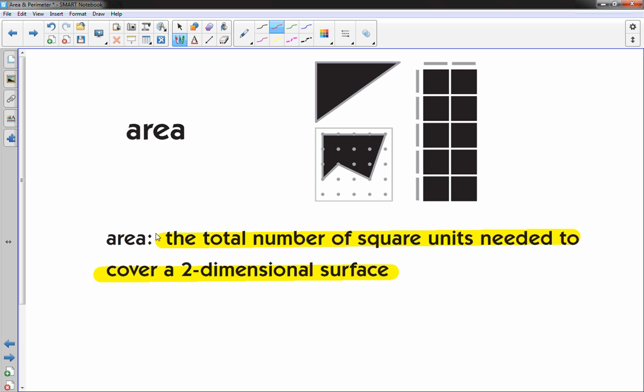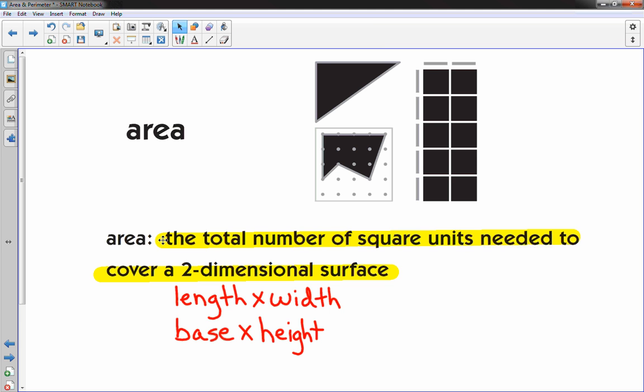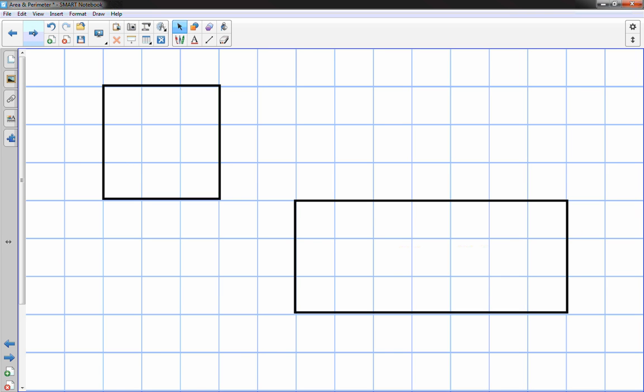In two dimensions, you have length and width of a shape or surface, or sometimes you might hear base, which would be like the bottom, times height, how tall it is. So let's get started with rectangles. Basically all I need to know is how long is the base and how tall is it.